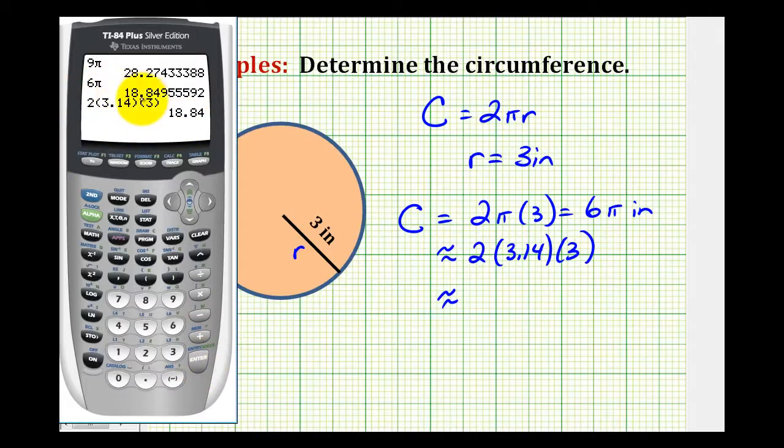For six pi, if we round to the hundredths, we have eighteen point eight five. Here if we round pi before we multiply, we only have eighteen point eight four. So it is important to read the directions because if they do ask you to use three point one four for pi,